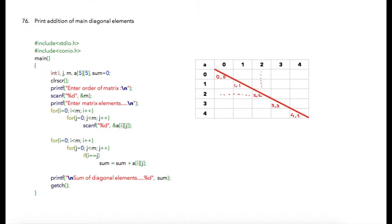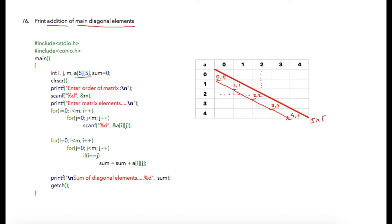In this lecture we are going to find the addition of main diagonal elements of any given matrix. We have a 5 by 5 square matrix in this case. Wherever the row number is equal to the column number, all such elements form main diagonal elements. In the case of this 5 by 5 matrix, these are all five main diagonal elements: positions (0,0), (1,1), (2,2), (3,3), and (4,4) are all diagonal elements.